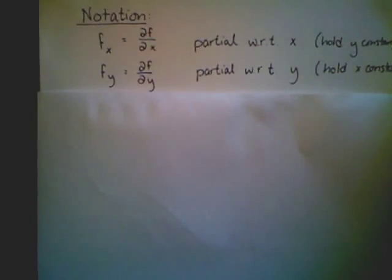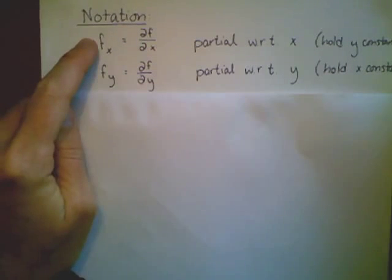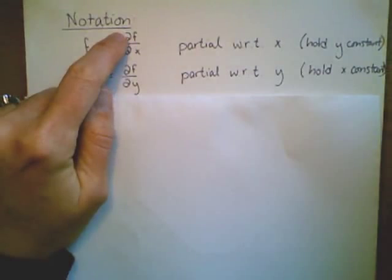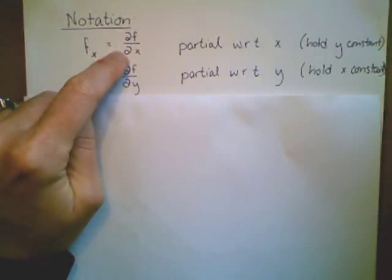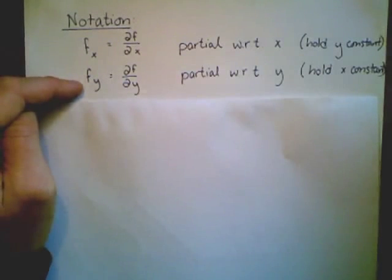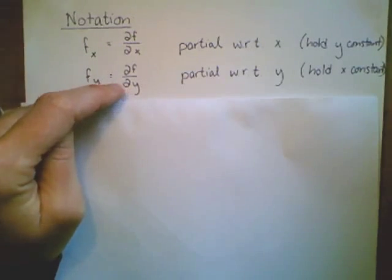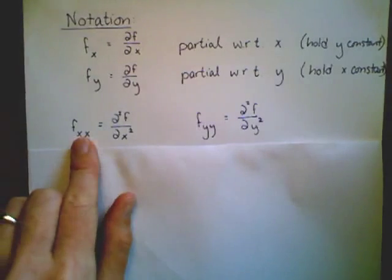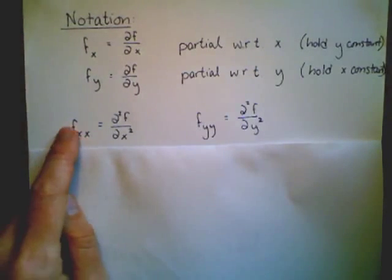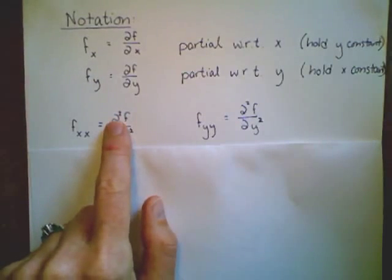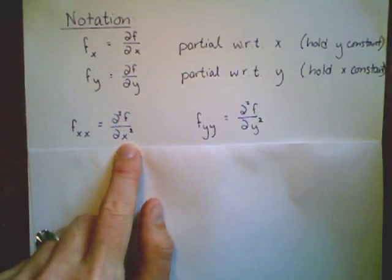Let's take a look at some notation. The notation I've been using is Newtonian notation — f sub x — indicating a partial derivative with respect to x holding y constant. That can also be written with curly d's as ∂f/∂x. This is an alternate notation that means the same thing. I can also write the partial derivative with respect to y as ∂f/∂y. This notation becomes helpful when doing multiple partial derivatives. For taking the partial derivative with respect to x twice, the notation is ∂²f/∂x².